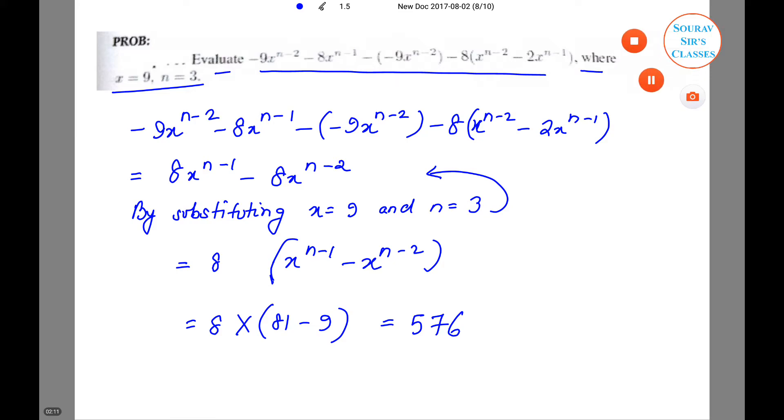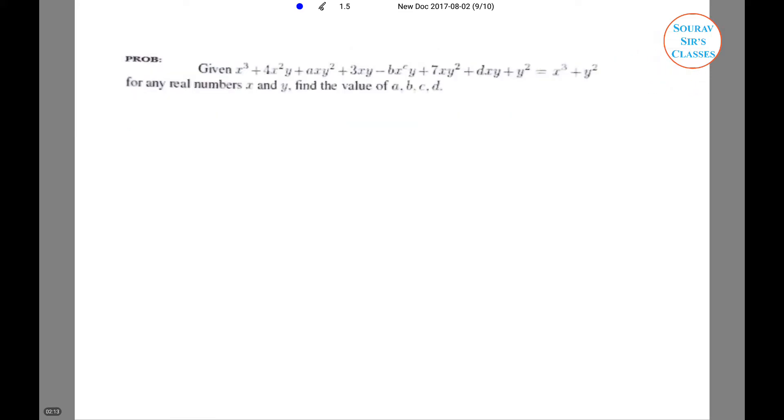Okay, moving on. We next move on to the second question of this tutorial. We have been given a long equation where there are many unknowns, and it is for any real variables x and y, and we need to comment on the values of a, b, c, and d.